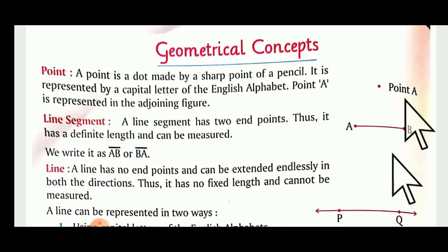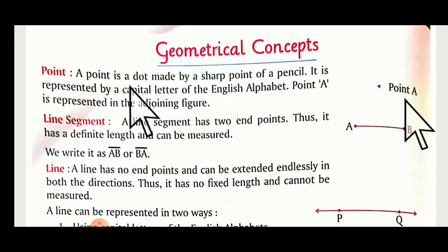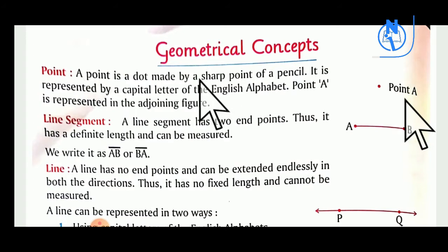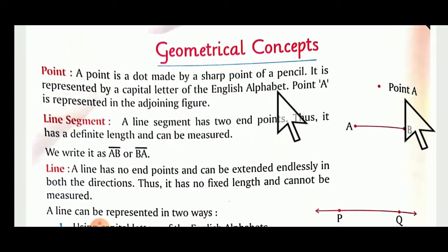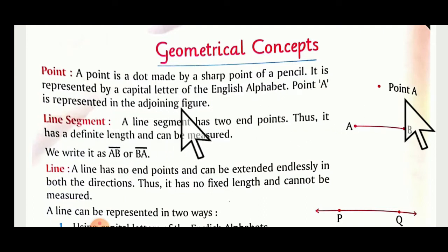What are the geometrical concepts in this chapter? We are going to learn what a point is. A point is a dot — it is shown here, named as A. A point is made by a sharp pencil. You can sharpen your pencil and place it on your page — it becomes a point. It is represented by a capital letter; we name it Point A. Otherwise it becomes nameless.